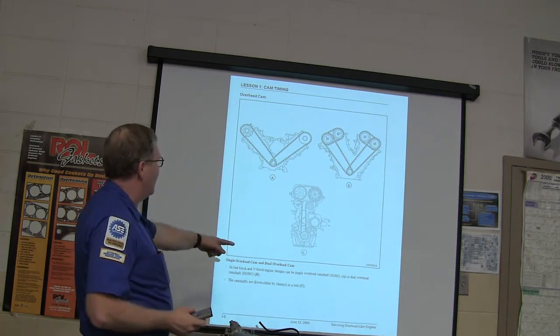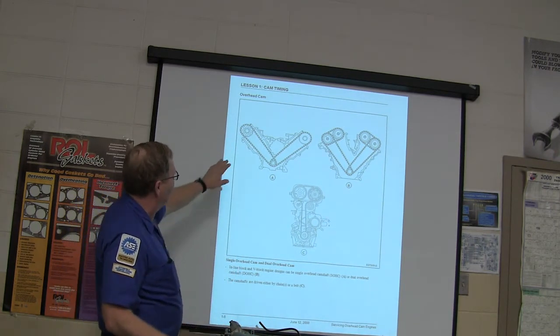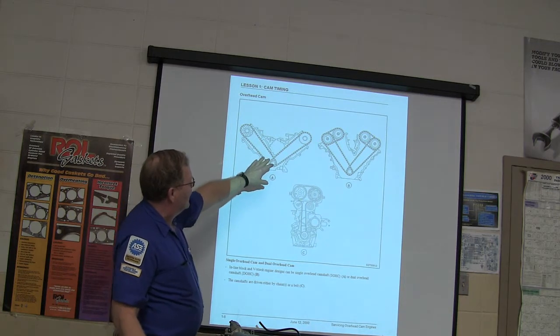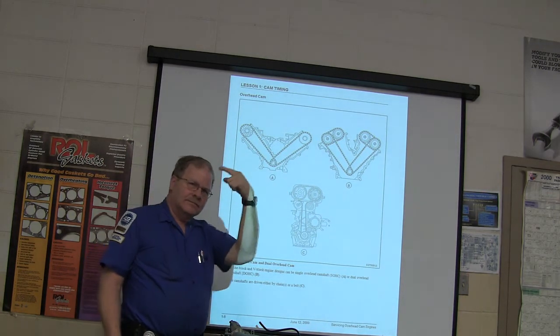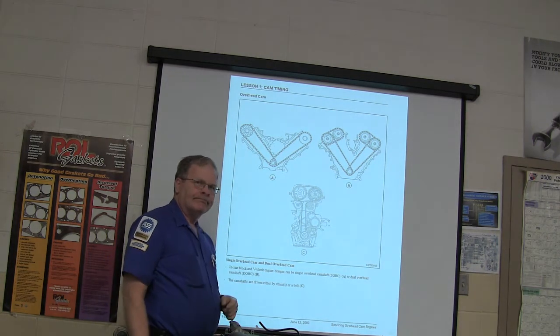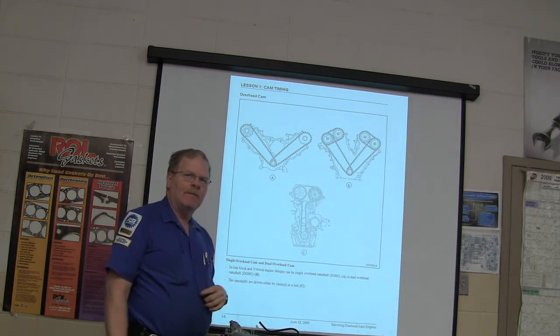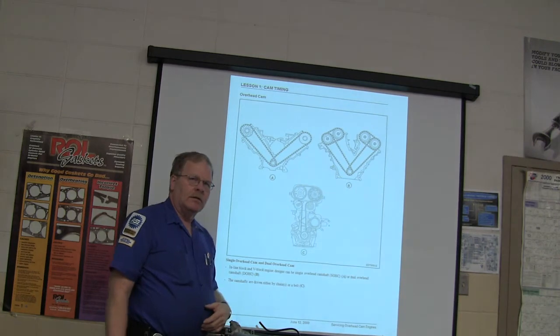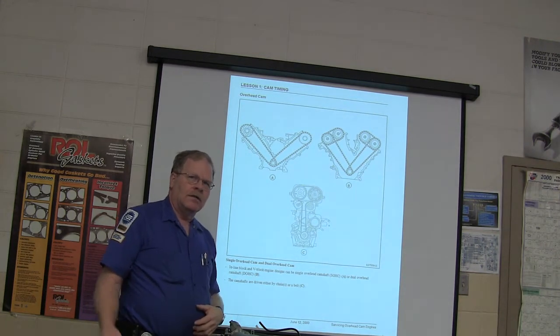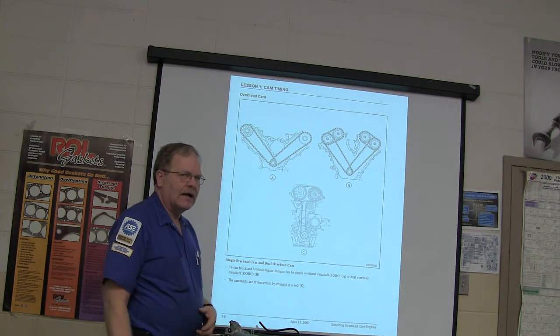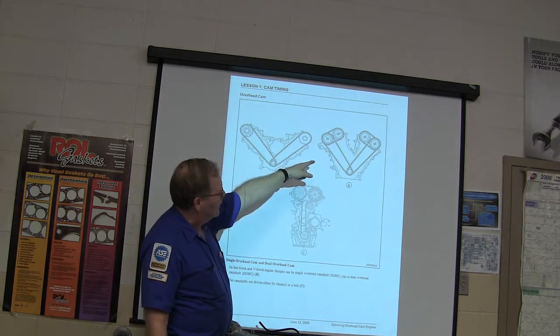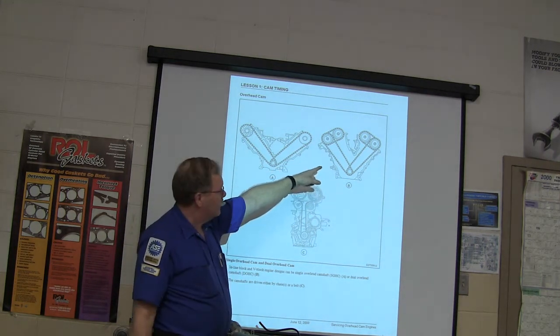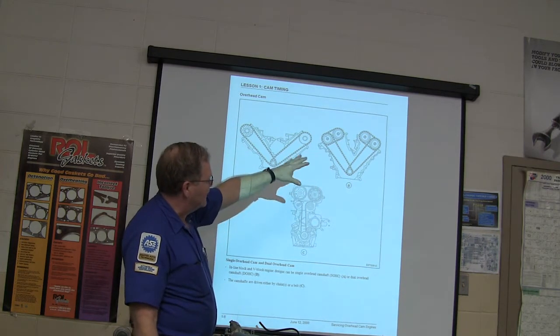You've got single overhead cam and dual overhead cam. Notice this right here. This is like the engine that Napper put the cam phasers and timing chain on. The one that's on the stand in there is similar, but that doesn't have cam phasers. This one right here is like the one you did. It's got the little timing chain and all that's got to be timed.